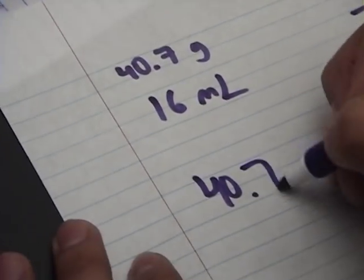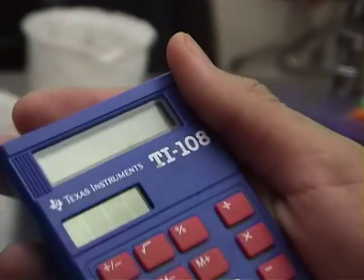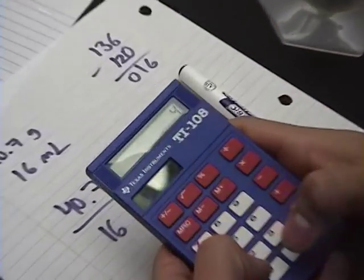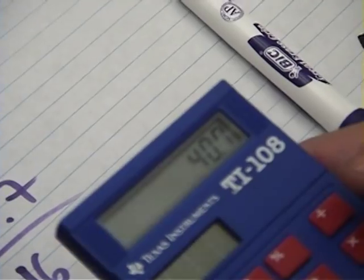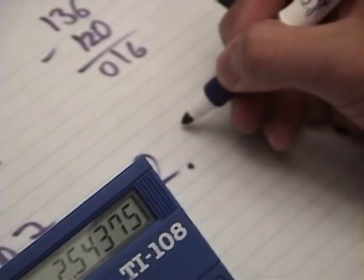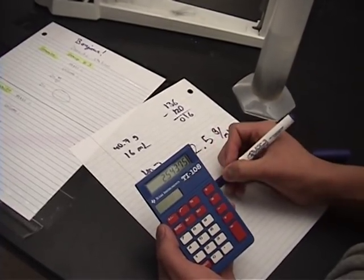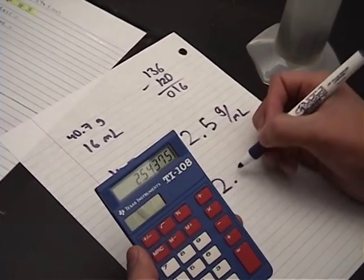So to find the density, you have to divide the mass, which is 40.7, by the volume, which is 16. So you get a calculator. TI 108. The blue kind, alright? And then you divide 40.7 by 16. And it's 2.5 grams per milliliters. And that's the density of this rock. Basalt.